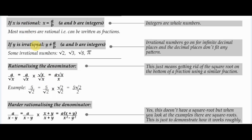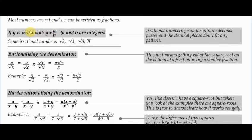Now for some useful facts: rational and irrational numbers. Rational numbers are most numbers — the proper definition is a number that can be written as a fraction. So if x is rational, it can be written as a fraction. For example, 5 is rational because it can be written as 5 over 1.